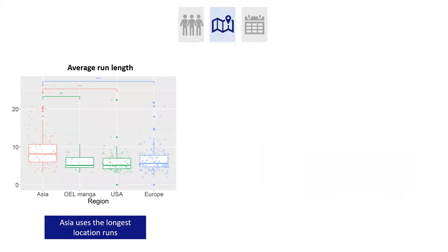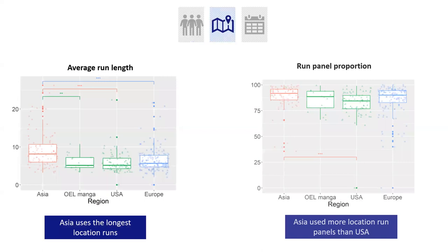Looking at spatial location, the average run length went up to around seven panels on average. Here, Asian comics used the longest location runs and similarly had the greatest run panel proportion. This also went up to about 85% — so about 85% of panels in the book were part of location runs.